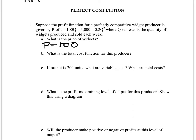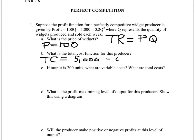We know that revenue — total revenue — is price times quantity. So the thing that changes with quantity here is 100, which is the price. The cost function is the negative side of the equation, so the total cost will be 5000 minus 0.2q squared. Remember that this enters negative in the profit equation because it's cost.